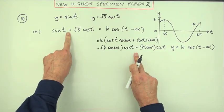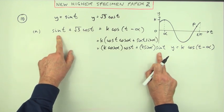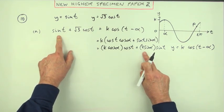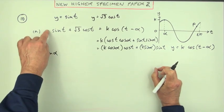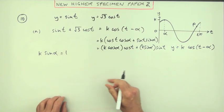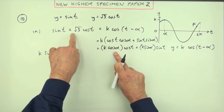Now these two things are meant to be the same. So that means the cos term equals the cos term, and the sine term equals the sine term. Do the sine one first. So k sine alpha is the coefficient of sine t, and that's just 1. And k cos alpha is the coefficient of cos t, and that's root 3.